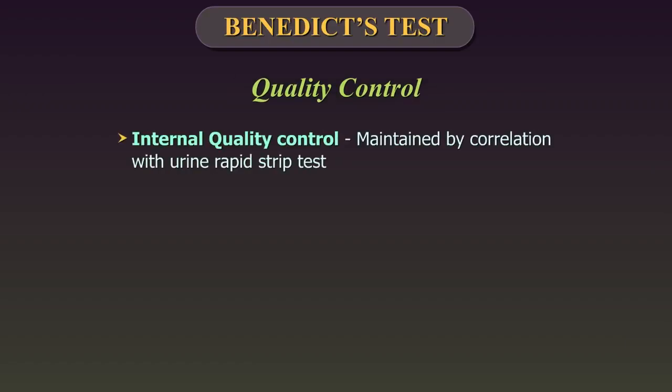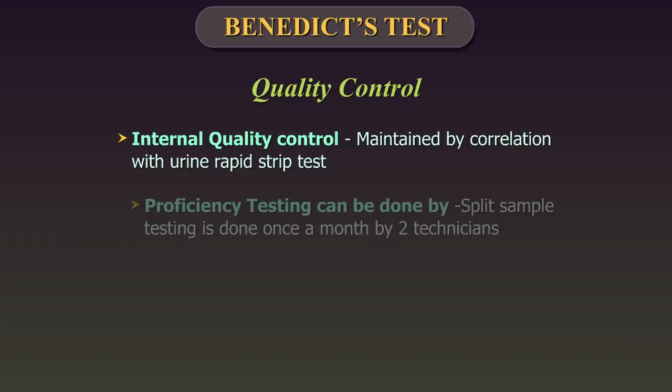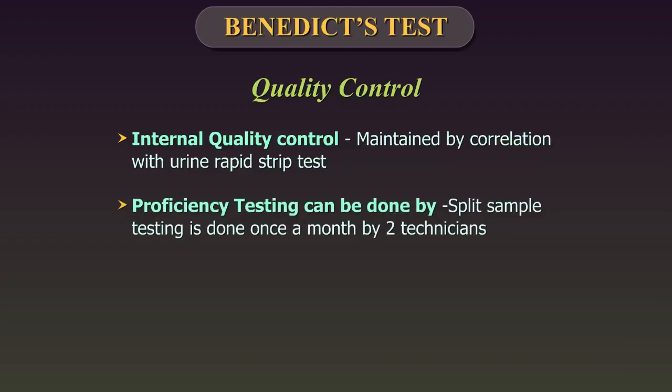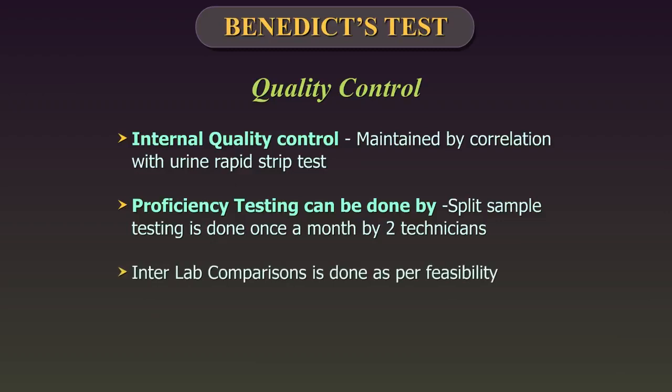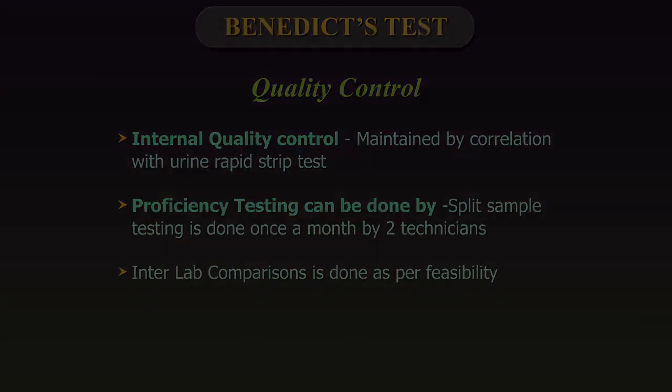Quality control: Internal quality control should be maintained by correlation with urine rapid strip test. Proficiency testing can be done by split sample testing once a month by two technicians. Interlab comparisons can be done as per feasibility.